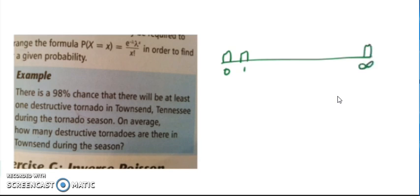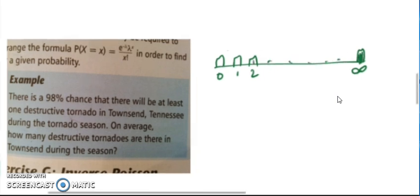So this says there is a 98% chance that there will be at least one destructive tornado at Townsend during the tornado season. So at least one. That's at least one. Two, that's at least one. Is one at least one? Yes, it is. So what I've colored in in green, all of that is 98%, leaving this last little piece here at 2%.